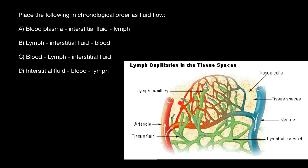When blood plasma enters the space between cells, we call this interstitial fluid. This interstitial fluid would return back to the blood system through oncotic pressure, and 10 percent would go into the lymph system.